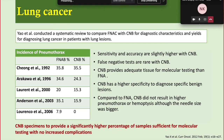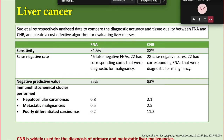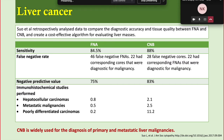For lung cancer, core biopsy specimens provide a significantly higher percentage of samples sufficient for molecular testing with no increased complications. This finding is from a study by Yao X et al. in 2012. For liver cancer, core biopsy is widely used for diagnosis of primary and metastatic liver malignancy with no increased risk of bleeding. This was published by Sue et al. in 2017.